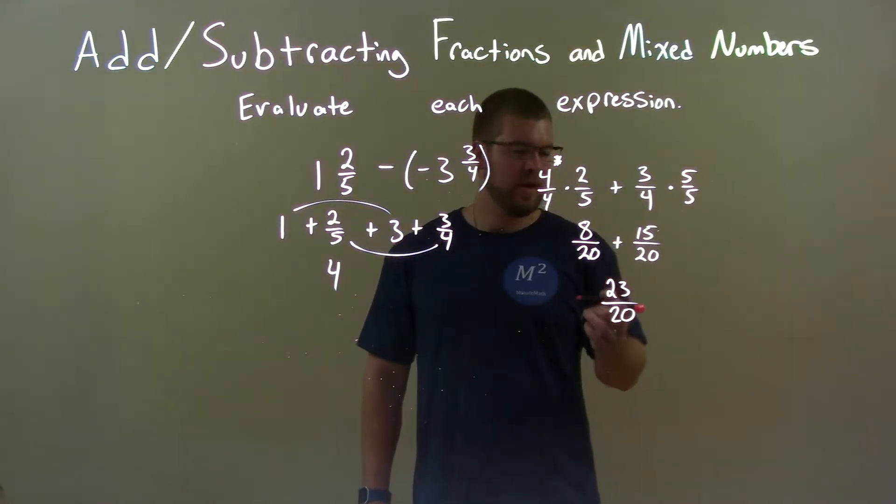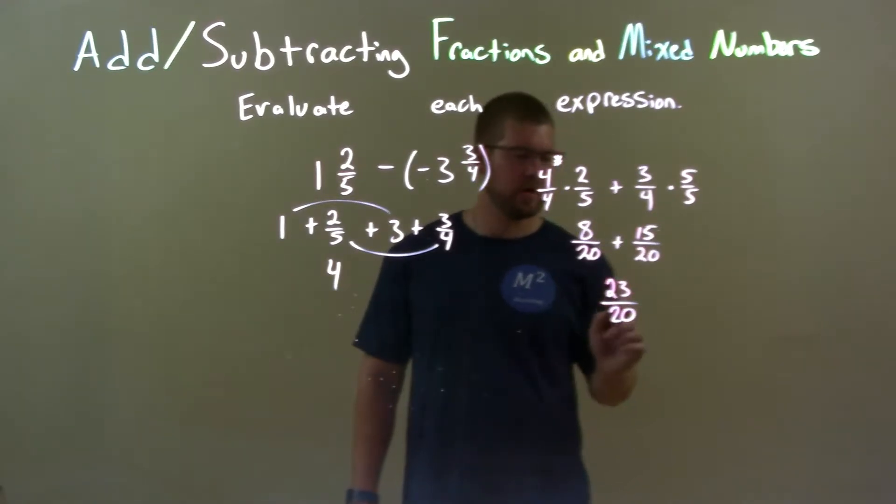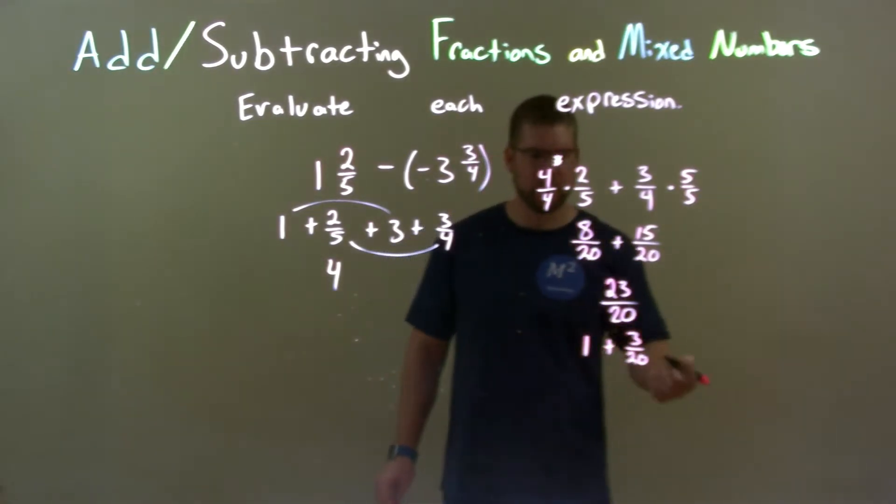Now, since this is an improper fraction, I'm going to break it to a mixed fraction there. And I'm going to break it up to be two parts. 20 goes in 23 one time with 3 left over. So, 3 over 20 is what's left.